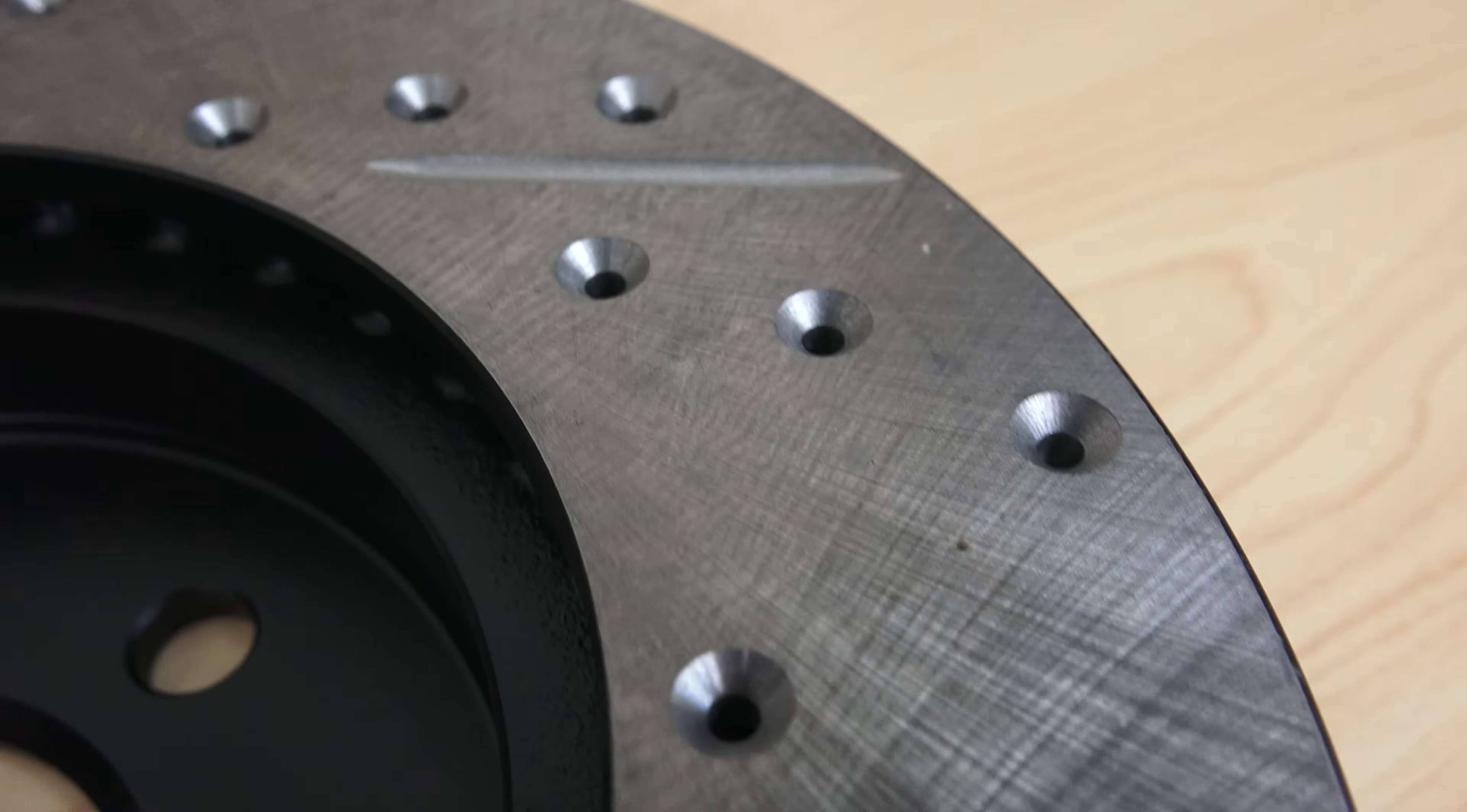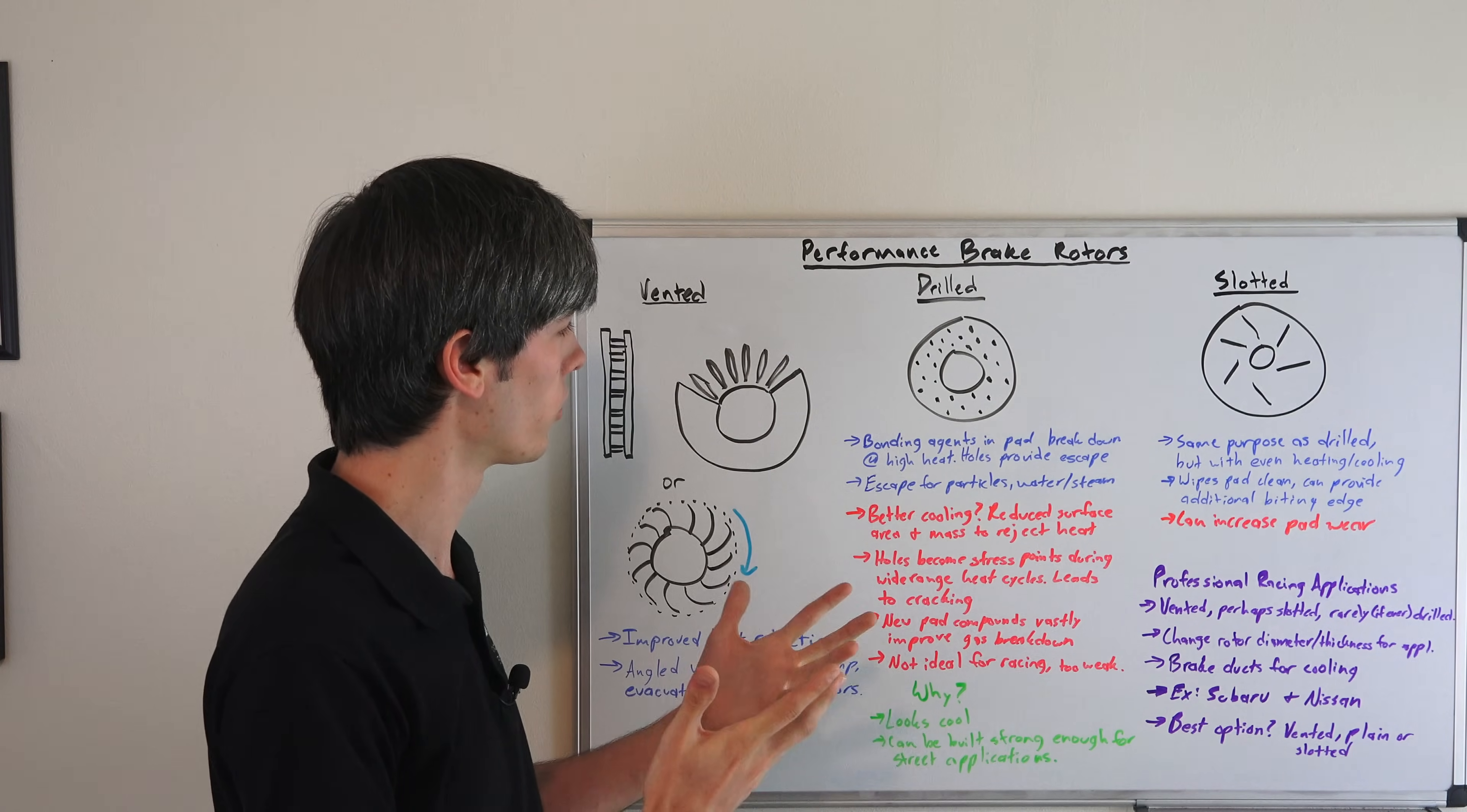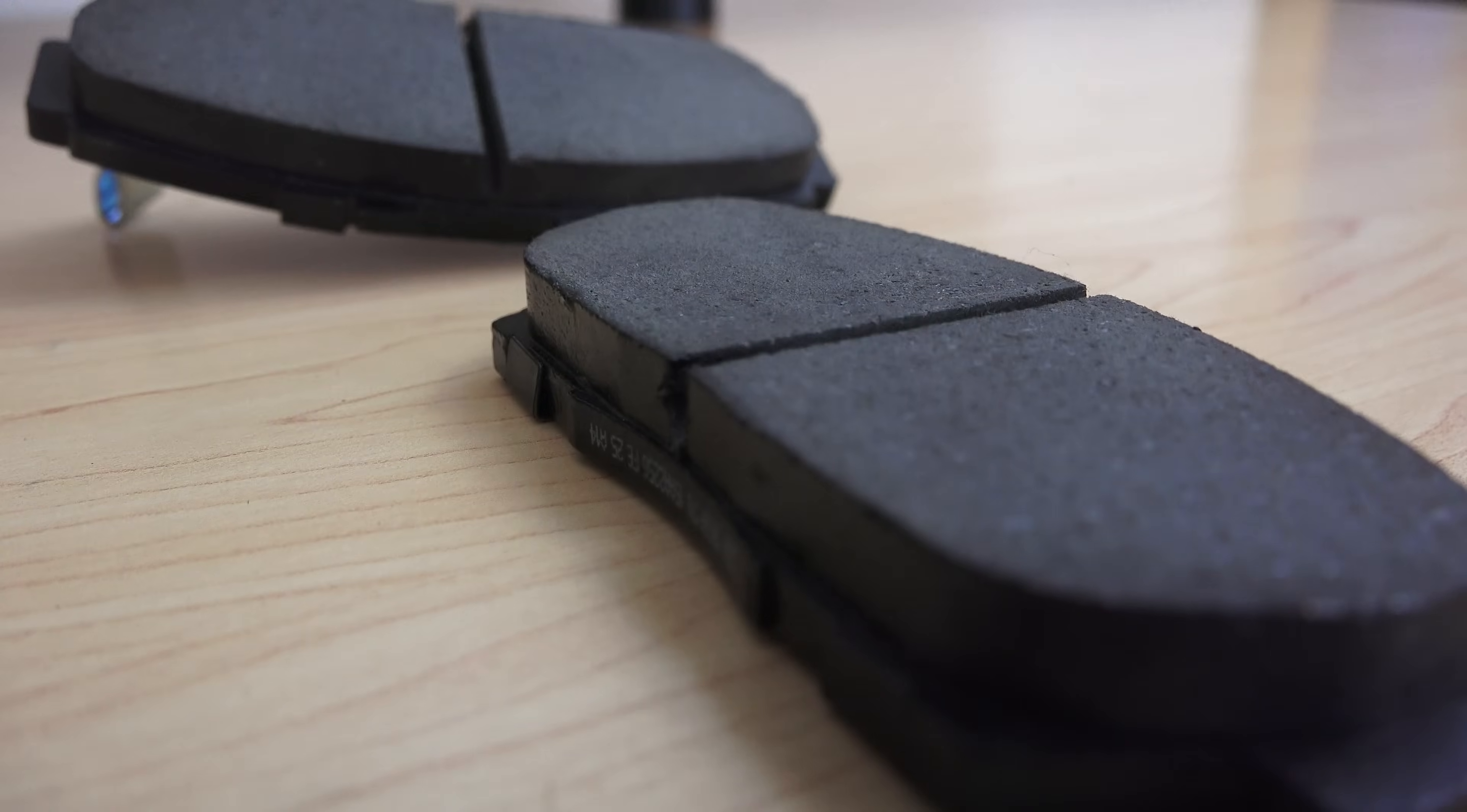Moving on to drilled rotors. This is where you simply drill through it, so you've got some little air holes in it. This is something that used to be more useful, and these days it isn't really anymore. Basically, you have bonding agents in the pad that break down at high heat, especially true for older pads.